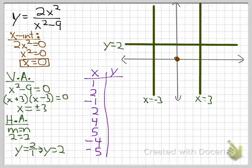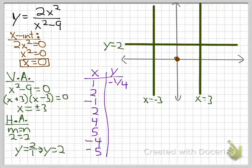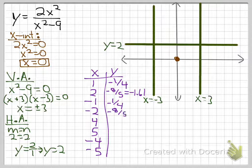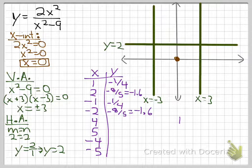Plugging in x equals 1 gives 2 over (1 minus 9), which is negative 1 fourth. Plugging in x equals 2 gives negative 8 fifths, which is about negative 1.6. Since we're squaring x, negative 1 and negative 2 give the same results: negative 1 fourth and negative 8 fifths respectively.